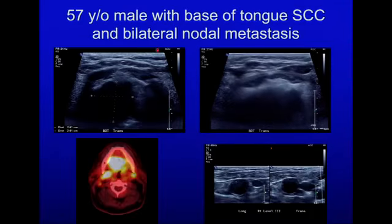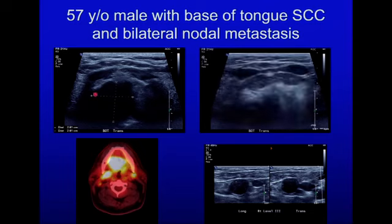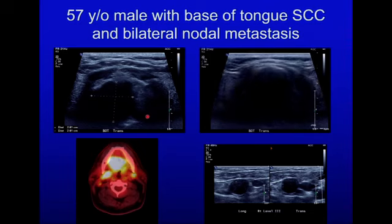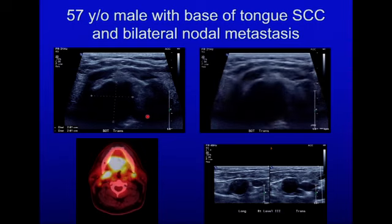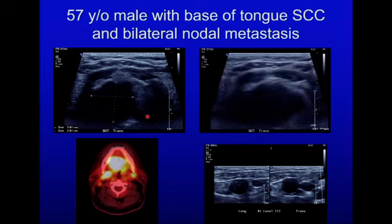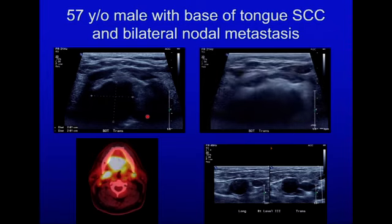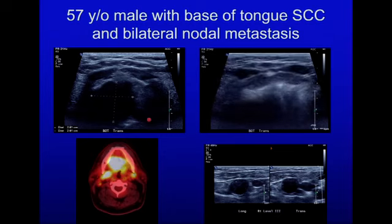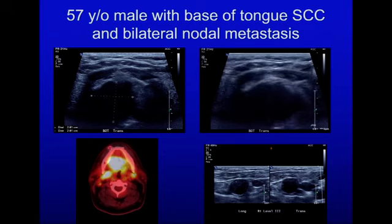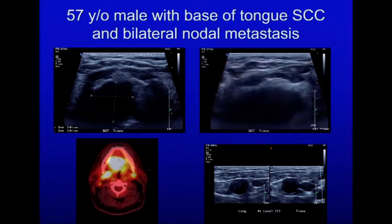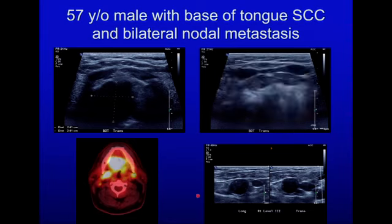Here is an example of a large base of tongue tumor seen with ultrasound via a submental approach. These tumors are usually fairly easily demonstrated as they tend to be quite hypoechoic and stand out well from the intrinsic muscles of the tongue, which tend to be hyperechoic. Here is a corresponding PET-CT showing the primary tumor and nodal metastases, one of which is demonstrated on ultrasound.